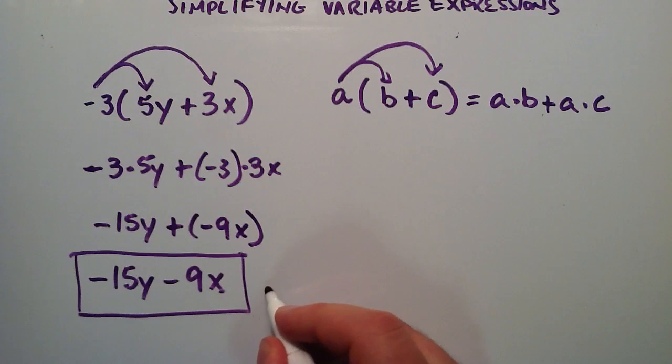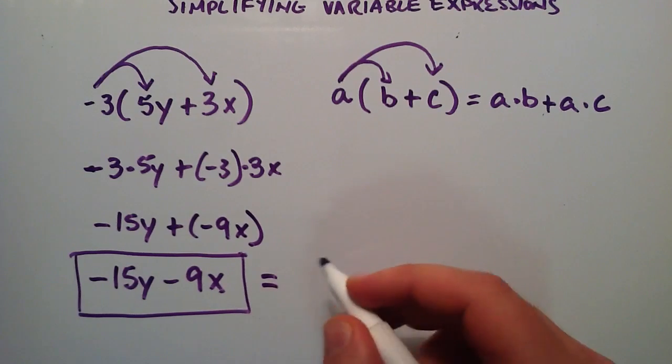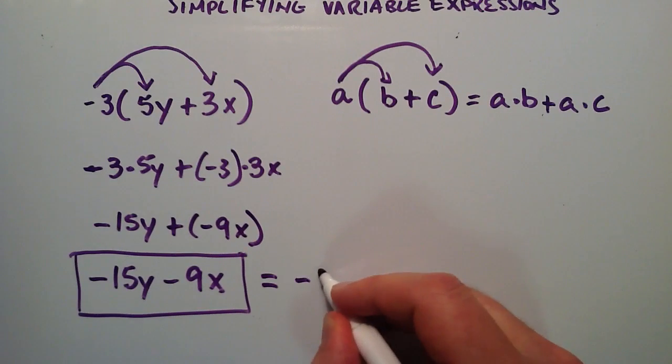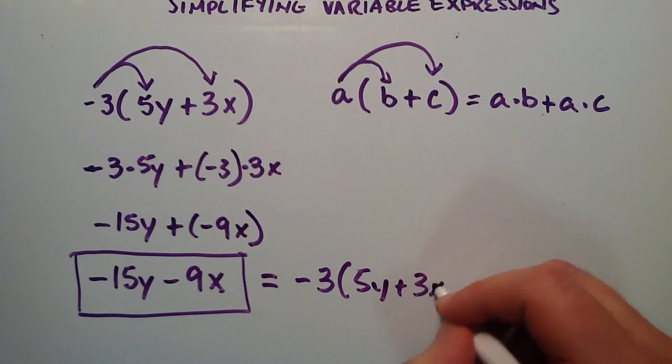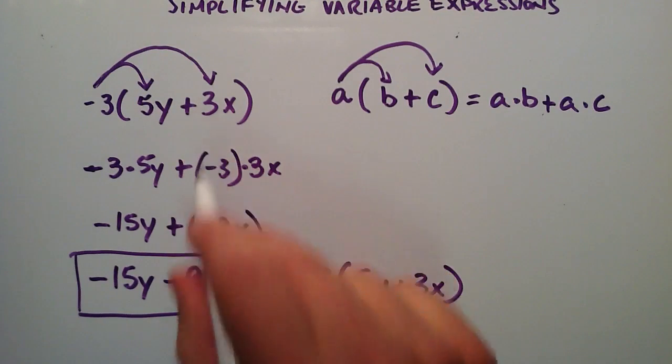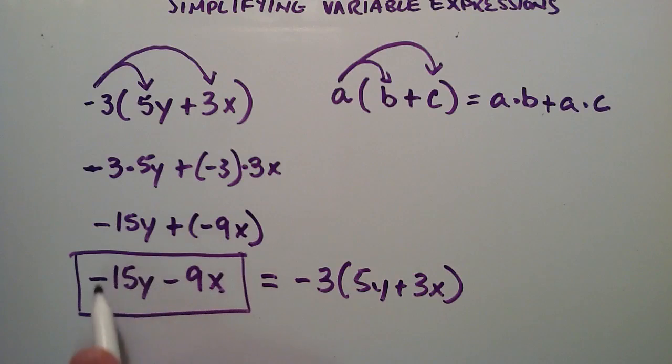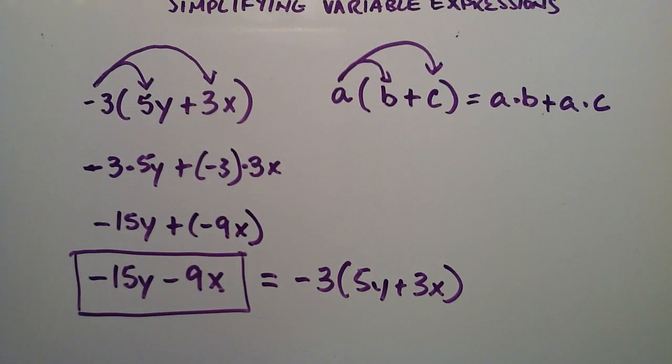And so this tells us that this is the same thing as if we were to write negative 3 times 5Y plus 3X from above. So these two are equivalent. This one is a little bit more simple. So that's how you simplify a variable expression using the distributive property.